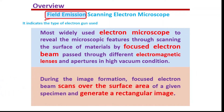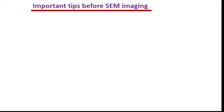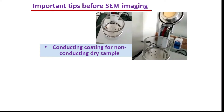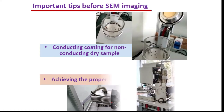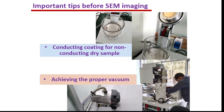For image formation, the focused electron beam scans over the surface of the given specimen and generates a rectangular image. For better imaging, the sample should be dry enough and coated with a conductive layer to avoid charging of the sample. For conductive samples, it is safe to coat them with a protective coating like gold coating. Proper vacuum conditions are required; otherwise the total system will not function properly.